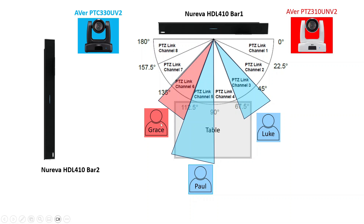When Grace is sitting in her area and talking, she will trigger PTZ Link channel 6, and channel 6 is assigned to a PTZ camera preset. When Paul is talking, he will trigger PTZ Link channel 5, and that channel is paired to PTZ camera. When Luke is talking, he triggers PTZ Link channel 3, and we assign channel 3 to the PTZ camera as well.